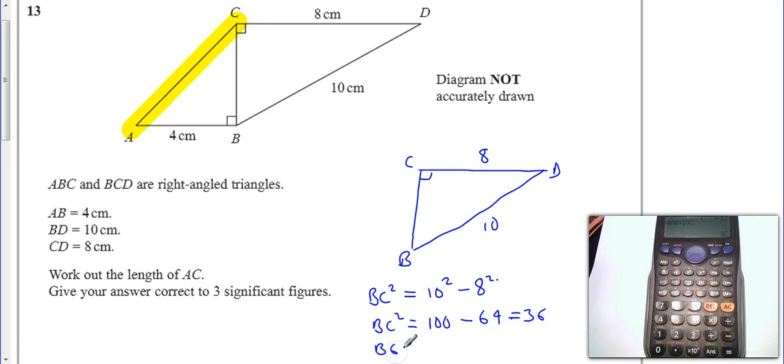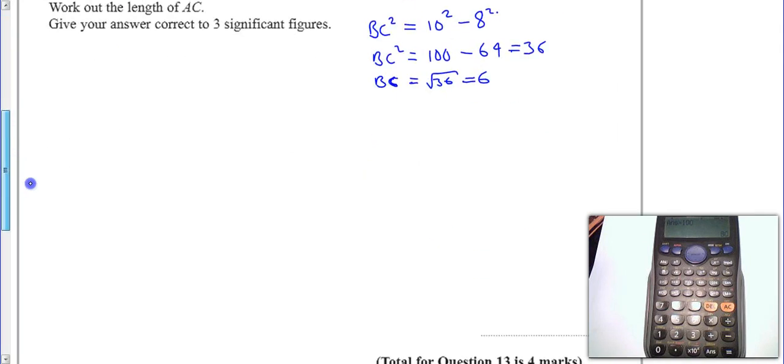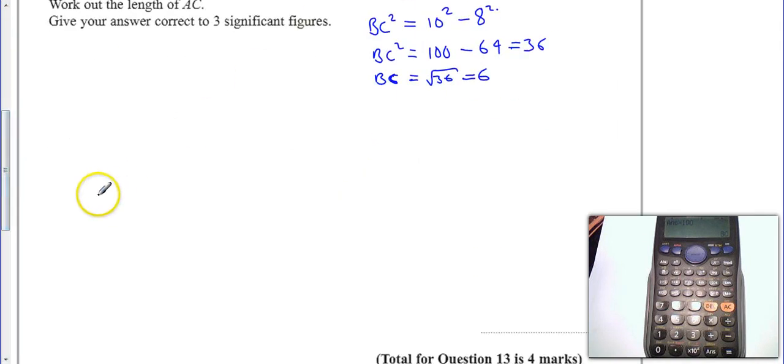Therefore BC is equal to square root of 36 which is just 6. So I'm going to put that in my diagram here. Now that tells us that to work out this length I'm going to use Pythagoras again.